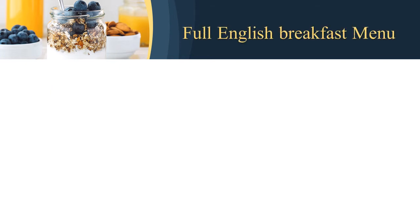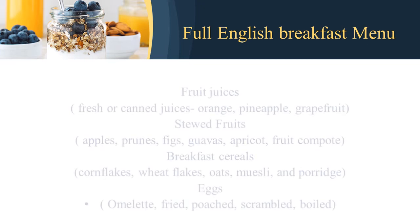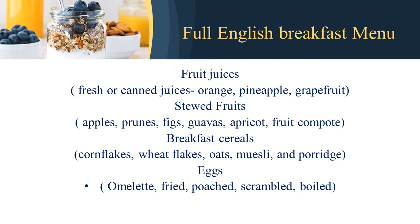Now let us understand the full English breakfast menu. It can include fruit juices — fresh or canned juices of orange, pineapple, and grapefruit. Then we can have stewed fruits such as apples, prunes, figs, guavas, apricots, and fruit compote. Breakfast cereals include cornflakes, wheat flakes, oats, muesli, and porridge. Egg preparations include omelette, fried, poached, scrambled, and boiled.